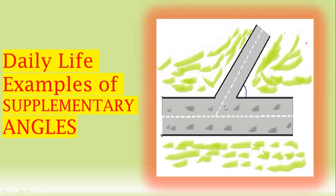This is a road, and this link road forms some angle with the main road. This link road again forms some angle with the other part of the road. When we add these two angles, it shows a straight line that is 180 degrees, meaning the sum of this angle and this angle is 180 degrees.